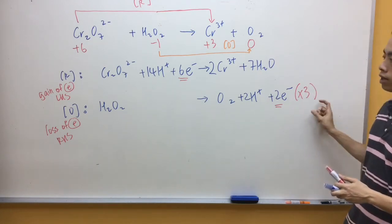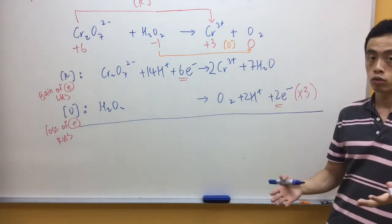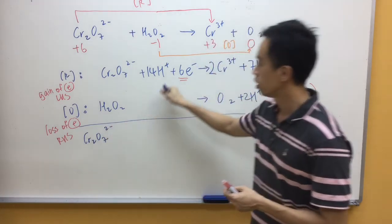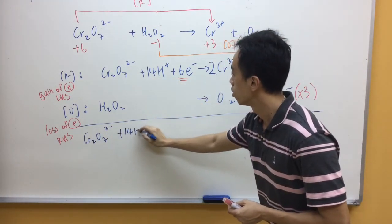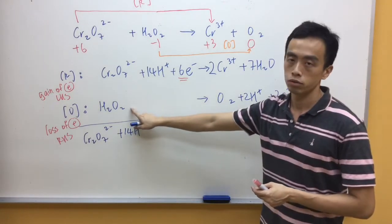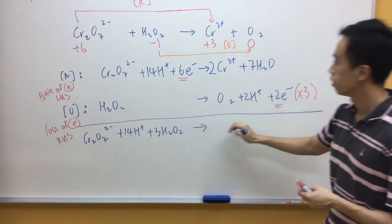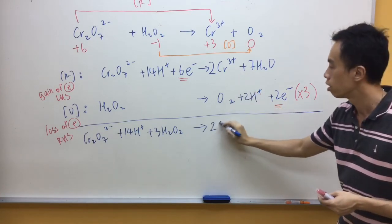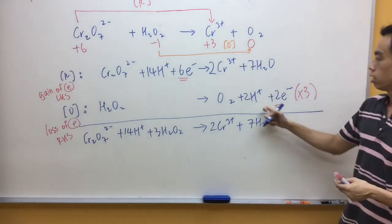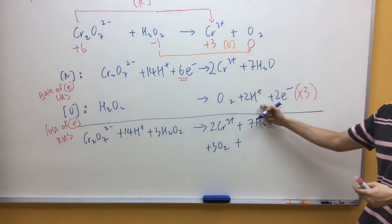Now what happens is when I multiply the oxidation half equation by 3, when I combine the 2 half equations together, the electrons will cancel out. So when I combine the 2 half equations together, I will have dichromate, my 14H+. My electrons will cancel out with the oxidation half equation, so I can leave that out. My hydrogen peroxide, remember I need to multiply by 3. The products: my chromium 3+, my 7 water, my 3 oxygen, and my 6 H+.